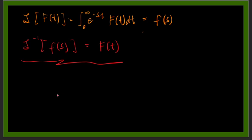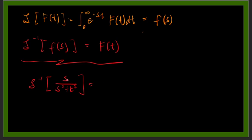For example, using our Laplace transform table, the inverse Laplace transform of s over s squared plus k squared — we know from the table that s over s squared plus k squared is the Laplace transform of cosine kt — so the answer is simply cosine kt.